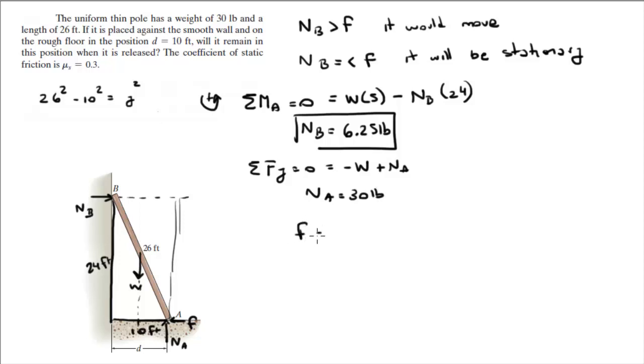You know that the force of friction is equal to the coefficient of friction times the normal. We have the normal and the coefficient already. The coefficient is given in the question at 0.3. So 0.3 times 30 equals 9 pounds. And we got the friction.